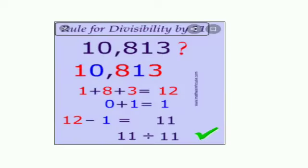Rule for divisibility by 11. Example: 10,813 — add the alternate digits: 1 plus 8 plus 3 equals 12, and 0 plus 1 equals 1. The difference of 12 and 1 is 11. Since 11 is divisible by 11, therefore 10,813 is also divisible by 11.